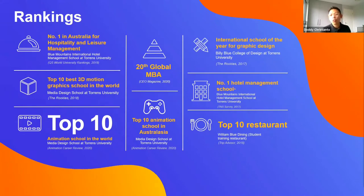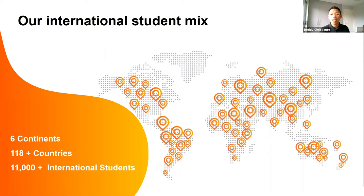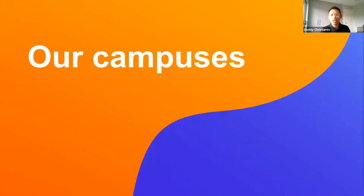We are a top 10 animation school in Australia, international school of the year for photographic design, and number one hotel management school. At Torrens University Australia, we own our own restaurant — William Blue Dining — which is a top 10 restaurant based on TripAdvisor. In terms of our international student mix, our students come from six continents and over 118 countries. Currently, we have more than 11,000 international students enrolled at Torrens University Australia. I'll now show you a quick snapshot of our campuses — enjoy the video.